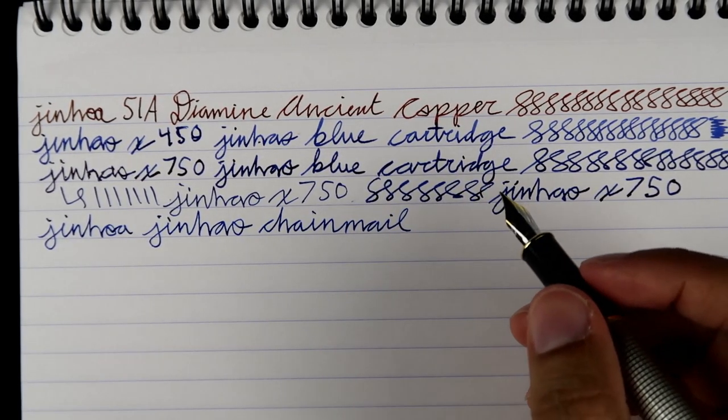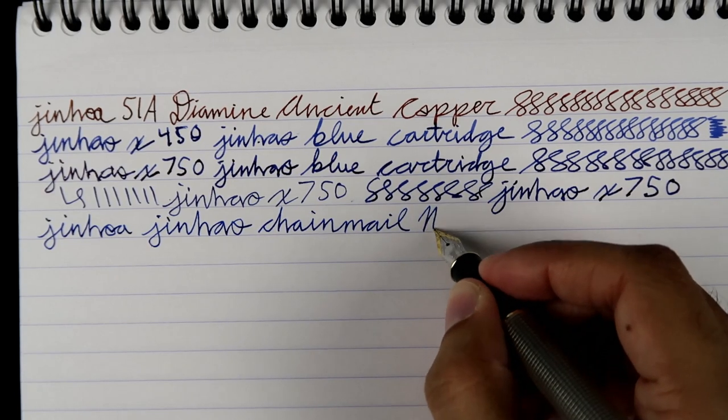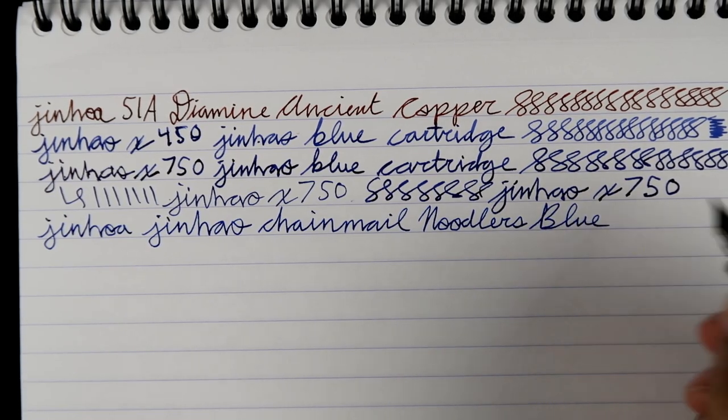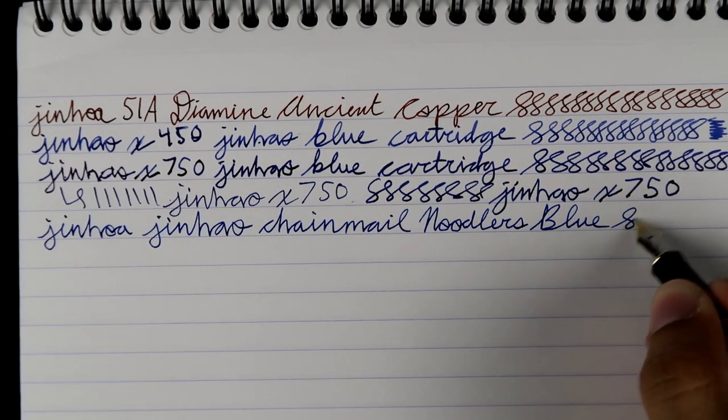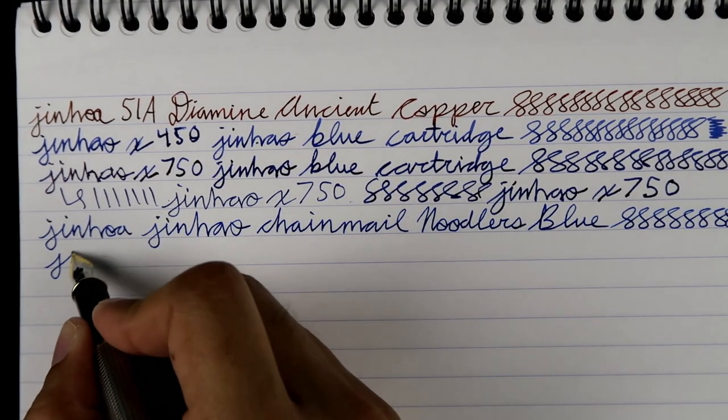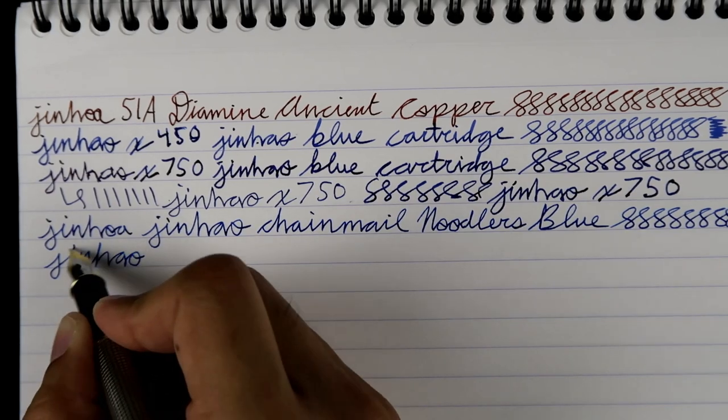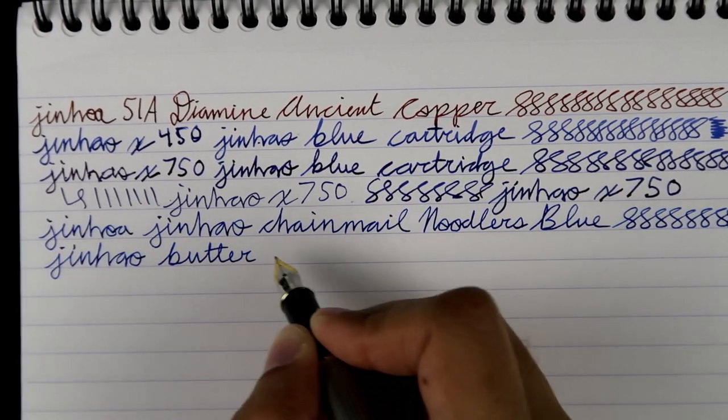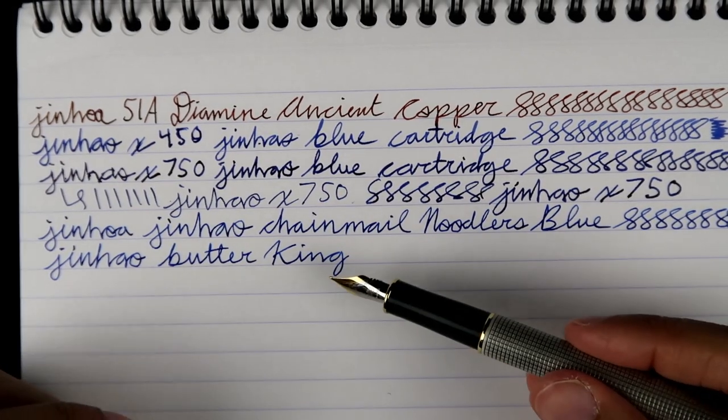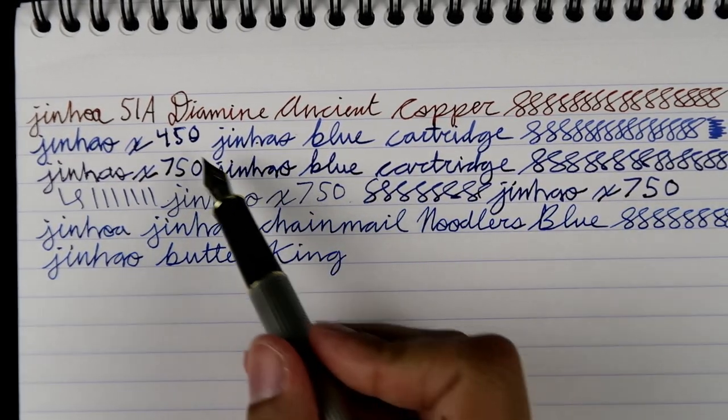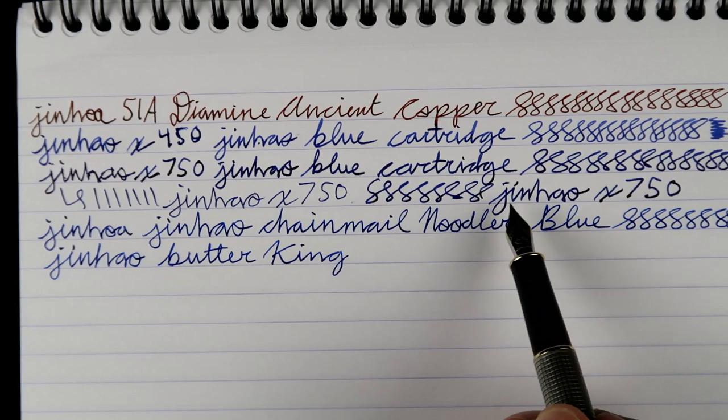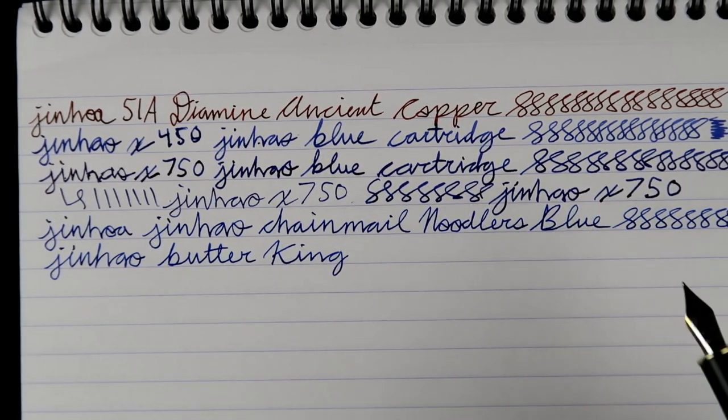And this ink I believe is Noodler's Blue. This is one of the best blues, one of the best blues. Eight action. Yeah, this is definitely one of the Butter Kings. Easily, easily one of the Butter Kings. Smooth as butter. And it's pretty fine. If you compare it to the Jinhao X450 and 750, see how thick they are. And I flipped the Jinhao X750, they got a little thinner, but still, compared to this bad boy. Look at that, nice and thick, that's fine writing.